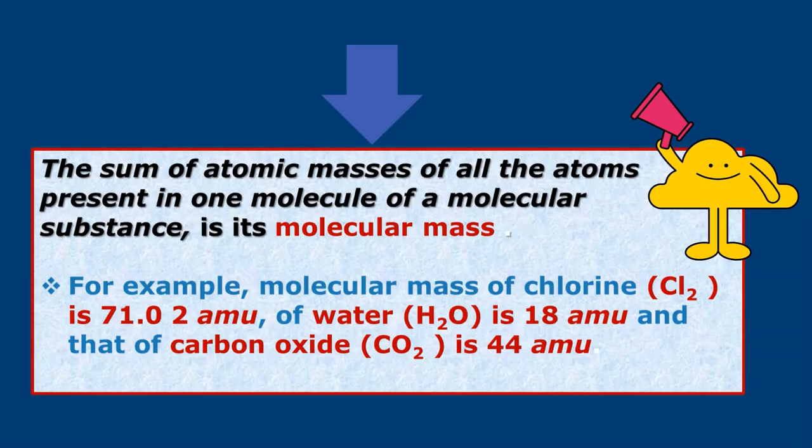The sum of atomic masses of all the atoms present in one molecule of a molecular substance is its molecular mass. For example, molecular mass of chlorine Cl2 is 71.02 amu, of water H2O is 18 amu, and that of carbon dioxide CO2 is 44 amu.